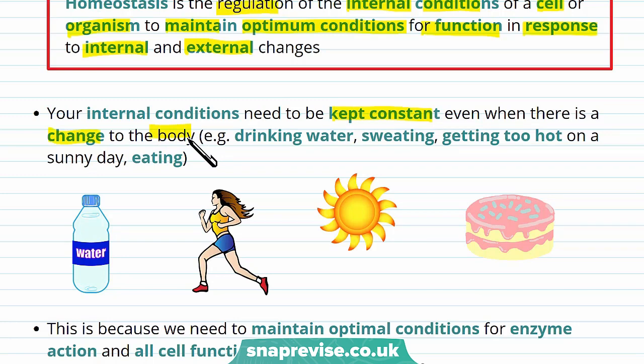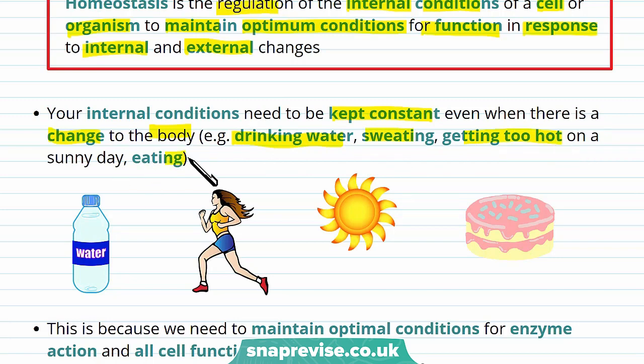For example, some of the changes include drinking water, sweating, getting too hot on a sunny day, and eating. These changes either increase or decrease the normal level of substances in your body.